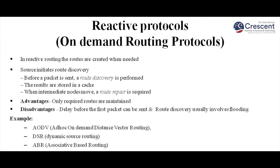Moving to the reactive protocol, also called on-demand routing protocol, it is mainly used to eliminate the overhead involved in proactive protocols. Reactive routes are created whenever needed — the source initiates a route discovery process, and before a packet is sent, route discovery is performed. The main advantage is that only required routes are maintained. The disadvantage is delay before the first packet can be sent, and route discovery usually involves a lot of flooding. Examples are AODV (ad hoc on-demand distance vector routing), dynamic source routing, and associative-based routing.